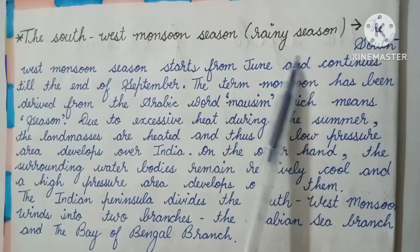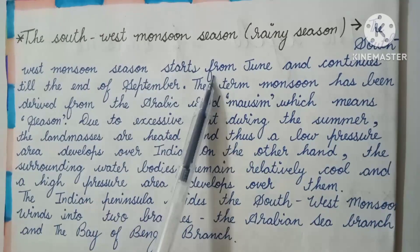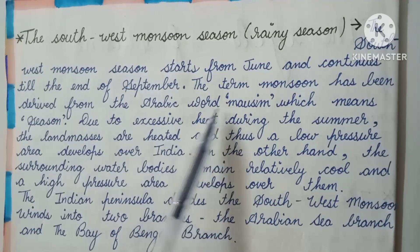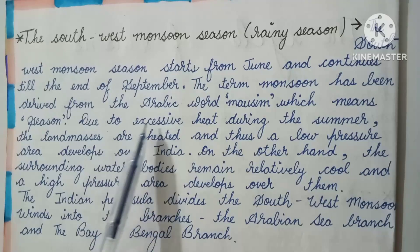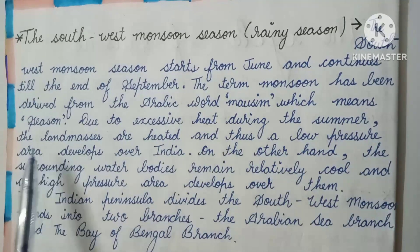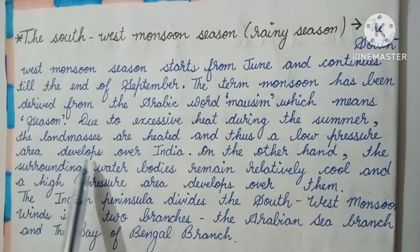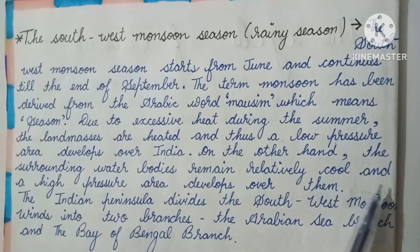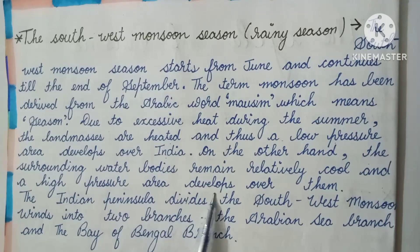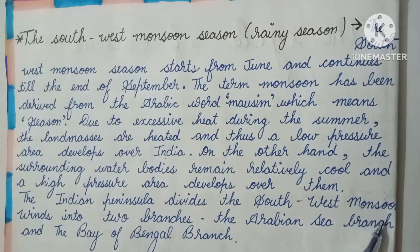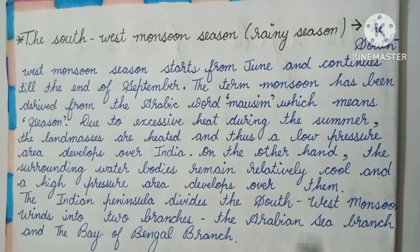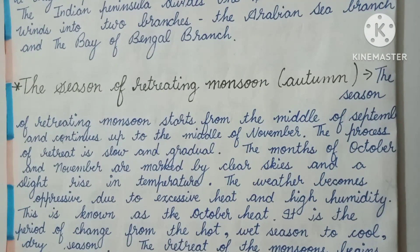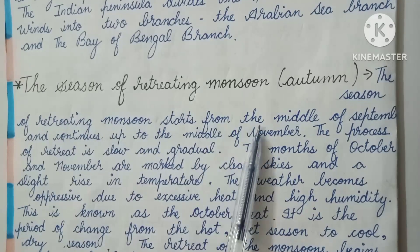The third season is the southwest monsoon season — the rainy season. It starts from June and continues till the end of September. The term monsoon has been derived from the Arabic word 'mossim', which means season. Due to excessive heat during summer, land masses are heated and a low-pressure area develops over India. The surrounding water bodies remain relatively cool and a high-pressure area develops over them. The Indian peninsula divides the southwest monsoon winds into two branches: the Arabian Sea branch and the Bay of Bengal branch.